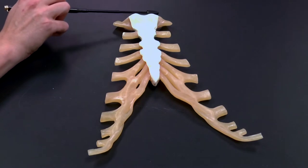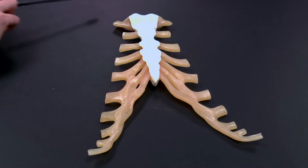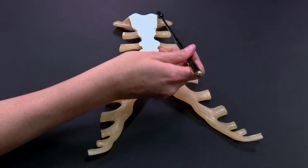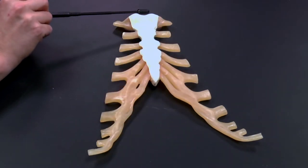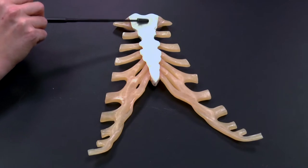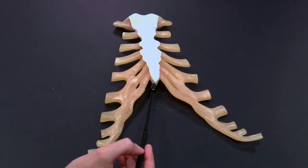This is the superior, this would be where your neck is. The clavicles or your collarbones would attach here and here. So the anterior part of the sternum, and then the inferior part of the sternum, which is right at the top of your abdomen.